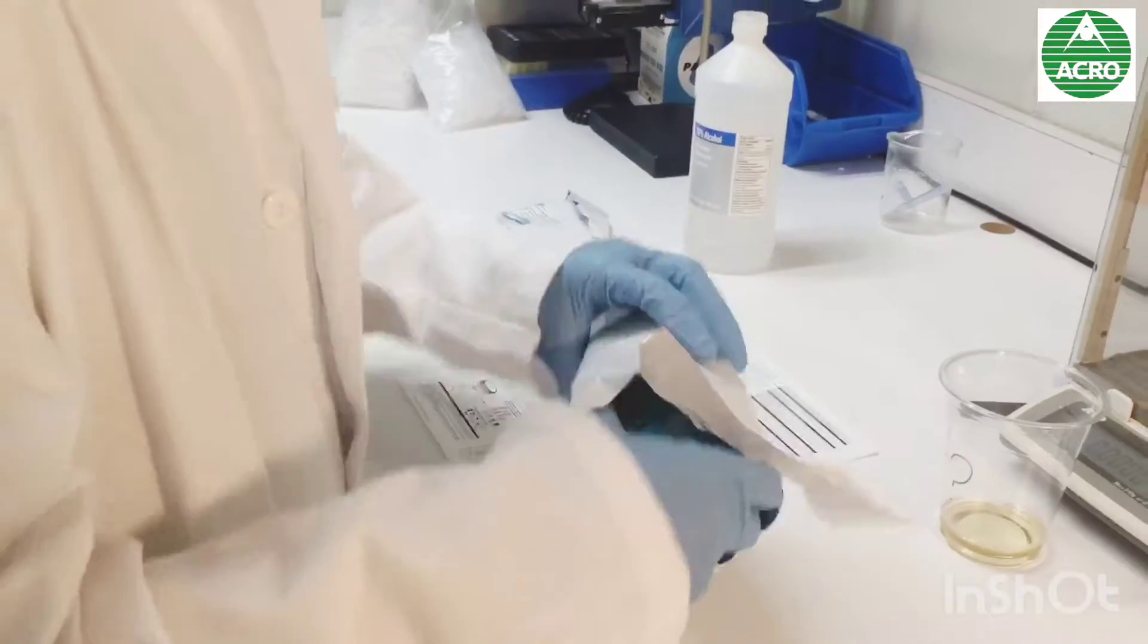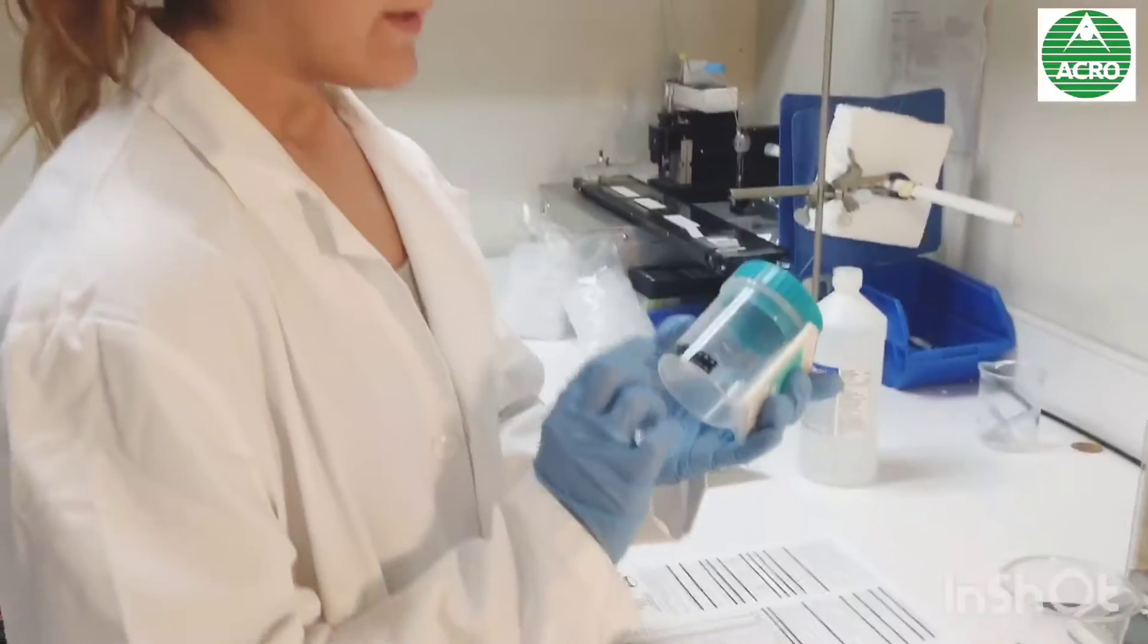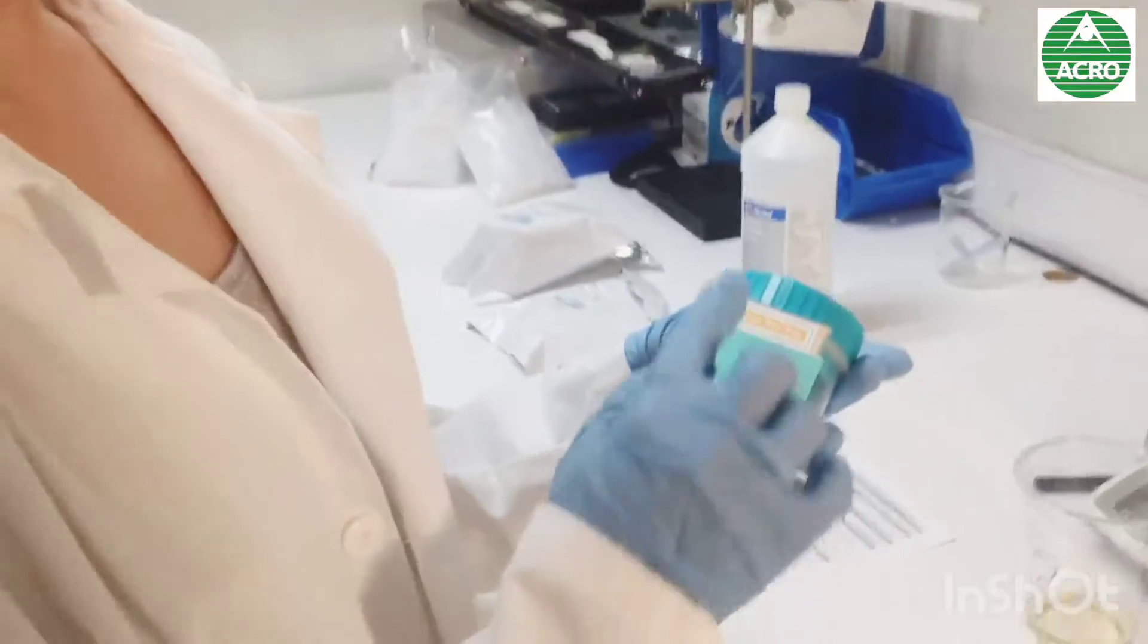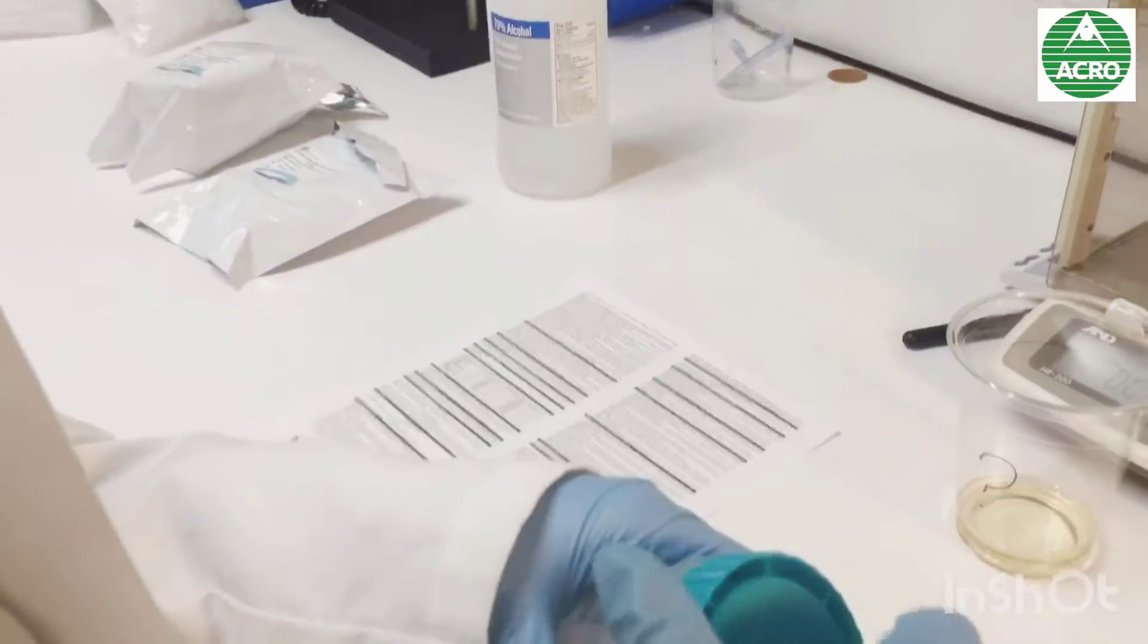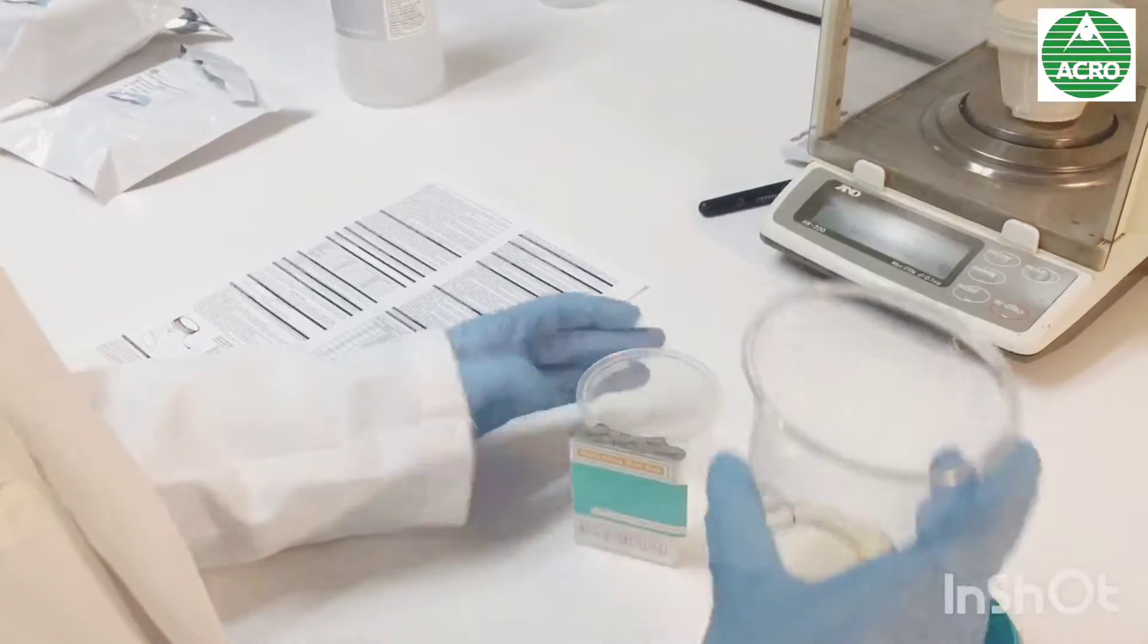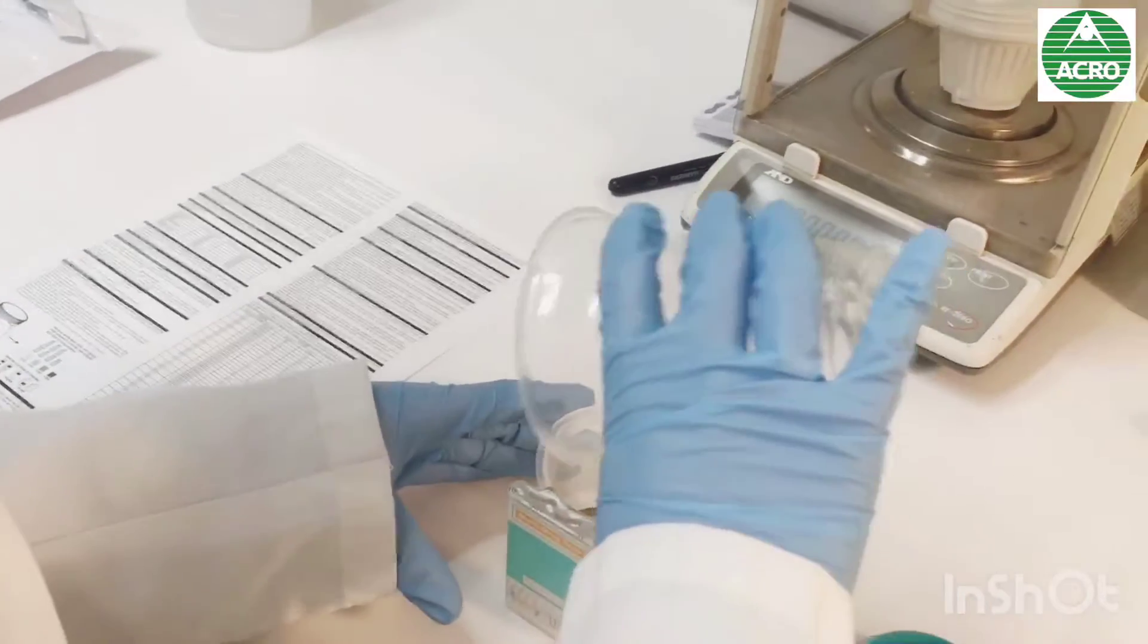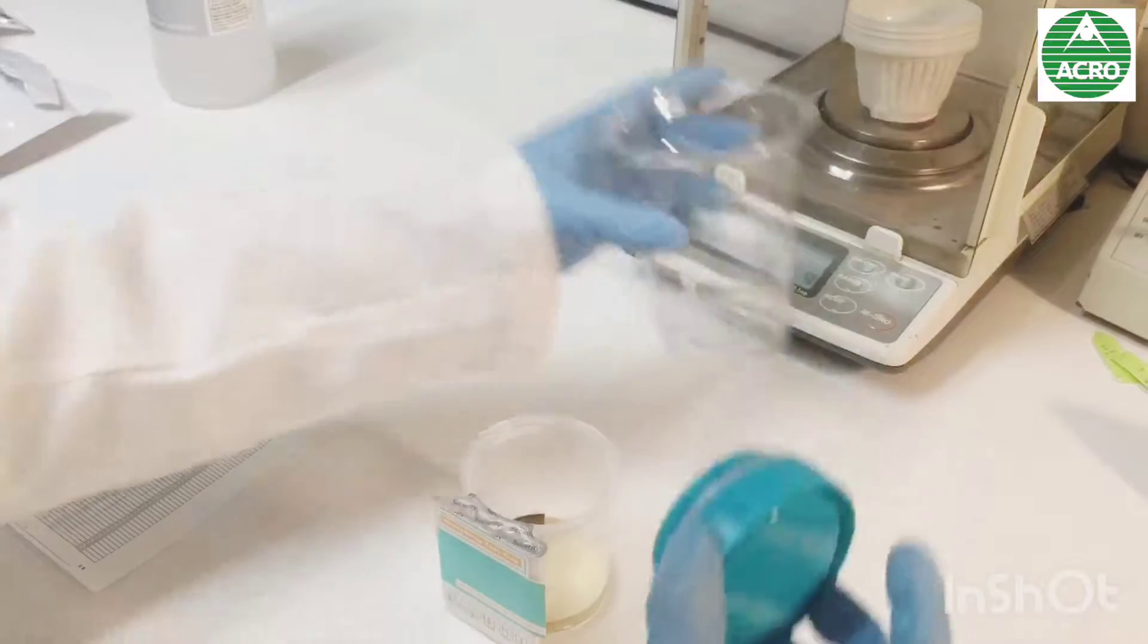So let's proceed with the testing. This is where we can check the adulteration and these are where the results are going to be. So we open it, we use the urine to check if it's positive or negative.